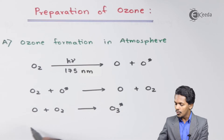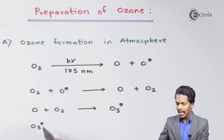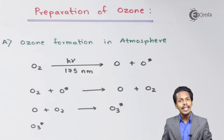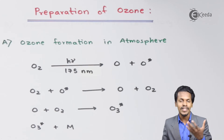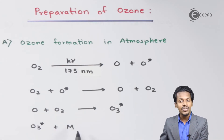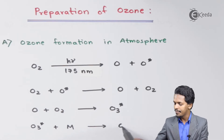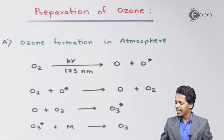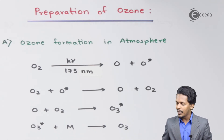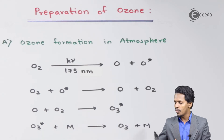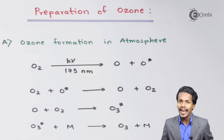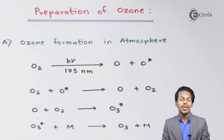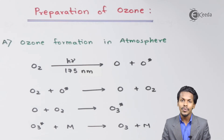To reduce the energy of O3* and make it stable, the excited ozone combines with an inert molecule present in the atmosphere — for example, nitrogen. It transfers its energy to nitrogen, and in this way we obtain stable ozone O3. This completes the atmospheric formation of ozone.